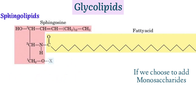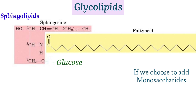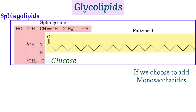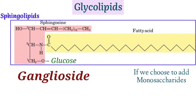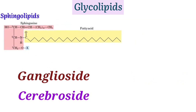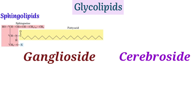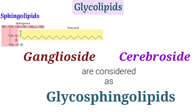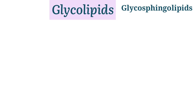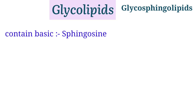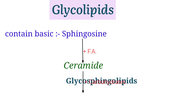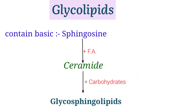If instead you add glucose, a single monosaccharide unit, to the hydroxyl group, the resulting glycolipid is known as ganglioside. You may have heard the terms ganglioside and cerebroside in relation to neurons and the brain. Gangliosides and cerebrosides are considered glycosphingolipids — glycolipids with sphingosine as their basic backbone, where addition of different carbohydrates gives rise to different names.